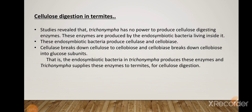Studies reveal that Trichonympha itself has no power to produce cellulose-digesting enzymes. These enzymes are produced by endosymbiotic bacteria living inside Trichonympha. The endosymbiotic bacteria produce cellulase and cellobiase: cellulase breaks down cellulose into cellobiose, and cellobiase breaks down cellobiose into glucose subunits. Trichonympha then supplies these enzymes to termites for cellulose digestion.